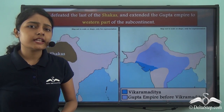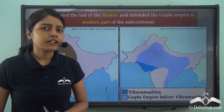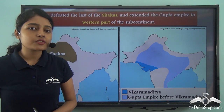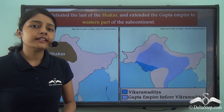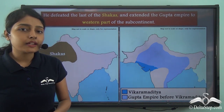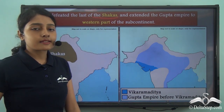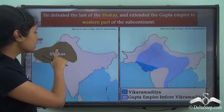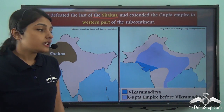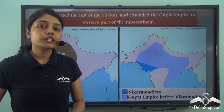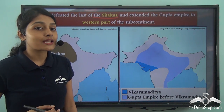Vikramaditya had already inherited a huge empire from Samudra Gupta. But like a very powerful and courageous ruler, he did not want to restrict himself. He had further ideas of expanding the Gupta Empire, which is why he defeated the last of the Shakas. The Shakas ruled over the western part of the Indian subcontinent, and Vikramaditya defeated the last of the Shakas in order to expand the Gupta Empire to the western part of the subcontinent as well.